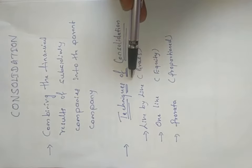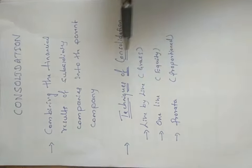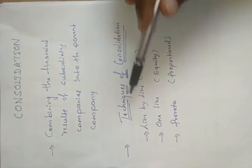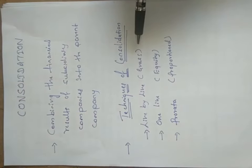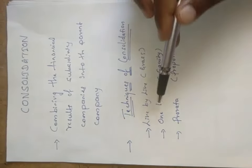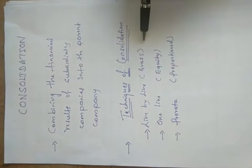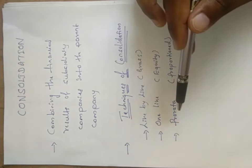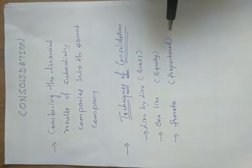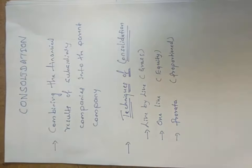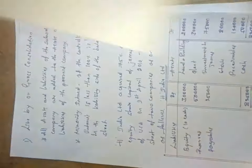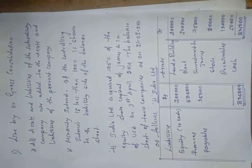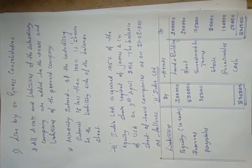The techniques of consolidation are: line by line consolidation, one line consolidation, and pro-rata consolidation — there are three types. Line by line consolidation can also be called gross consolidation; one line consolidation can also be called equity consolidation; and pro-rata consolidation can be considered as proportional consolidation.